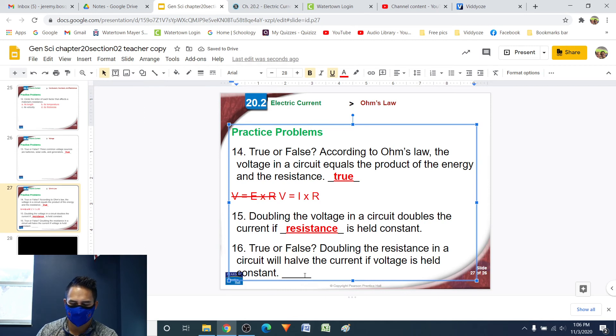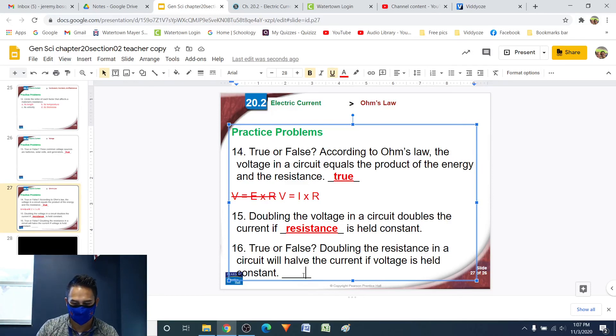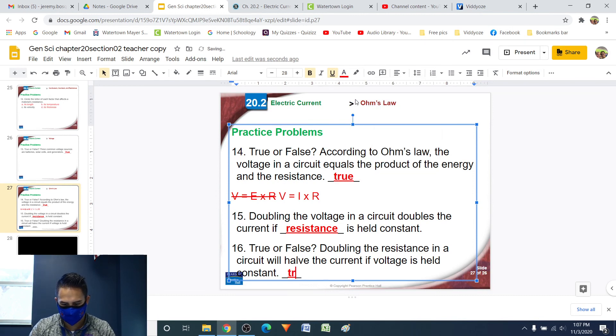Last question, number 16, true or false, doubling the resistance in a circuit will half the current if voltage is held constant. That is true. So if we have a bunch of resistance, friction, and we double it and the voltage doesn't change, then the current, which is how many charges are moving through a wire at any given time, is going to go down. So if we double the friction and we don't push on the charges any harder, then the current is going to go down by half. So, yes, that is true.